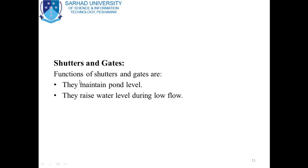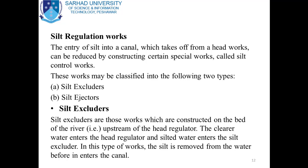Next is shutters and gates. Their functions are to maintain water level and to raise the water level during low flow. Next is silt regulation works. The entry of silt into a canal which takes off from a headwork can be reduced by constructing certain special works called silt control works. These works are classified into two types: silt excluders and silt ejectors.